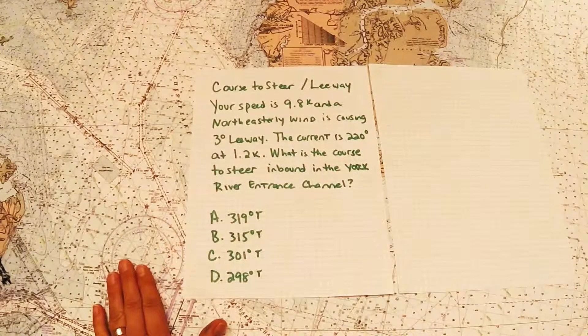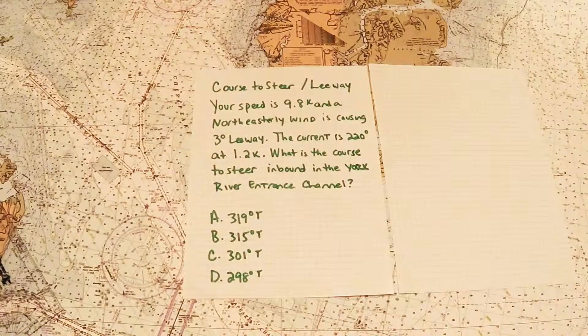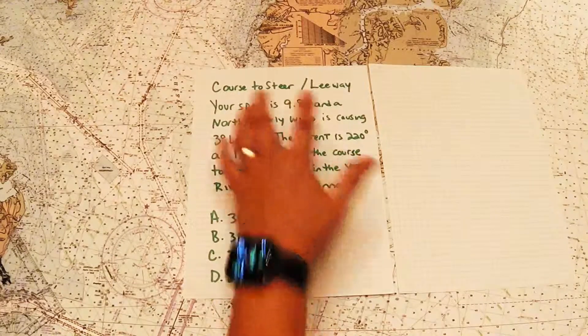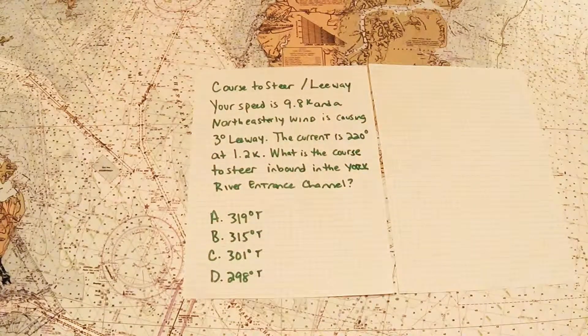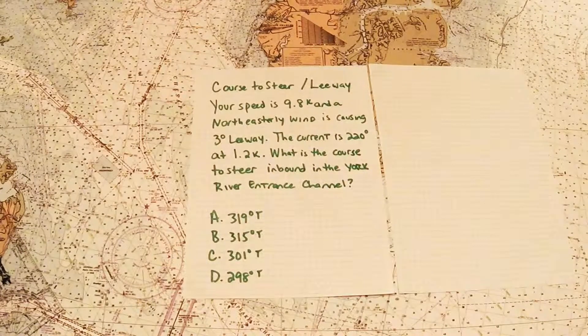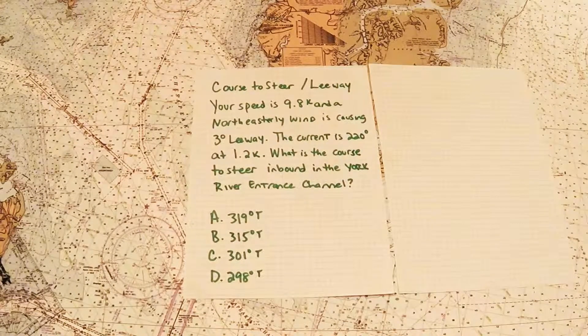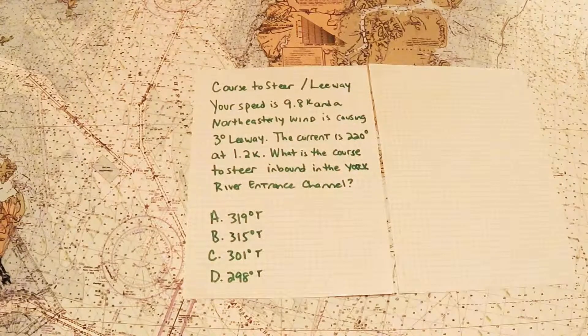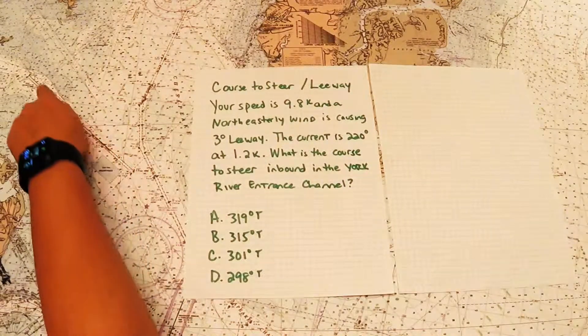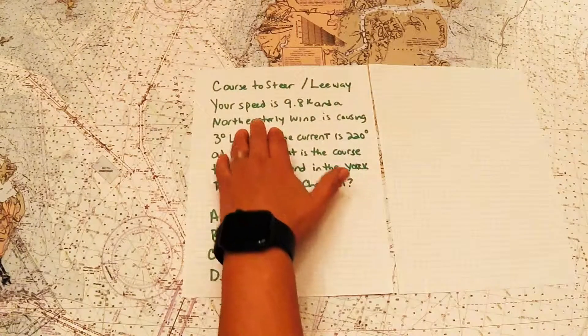Or you can do it right here on the compass rose, which is what I'm going to demonstrate for those of you who don't have the accessibility of a plotting sheet. So the first thing that we've got to determine is what information is given in the problem. First it tells us what our speed is. Our speed is 9.8 knots. And it tells us that we have a northeast wind causing three degrees of leeway. So that's an estimated angle that we're being pushed off by the wind. And the current is 220 at 1.2 knots. That's our set and drift. It says what is the course to steer inbound the York River entrance channel?